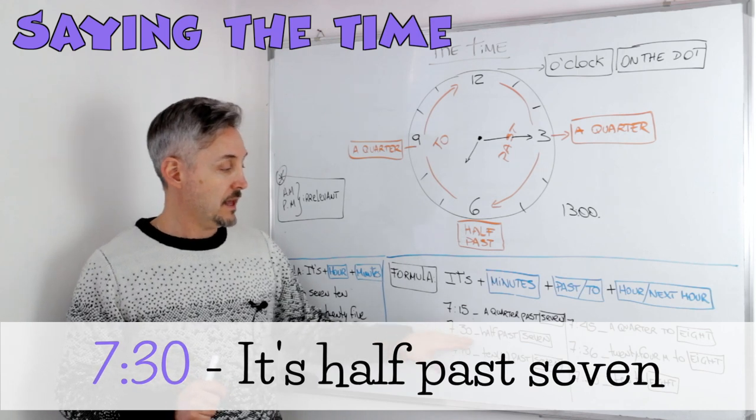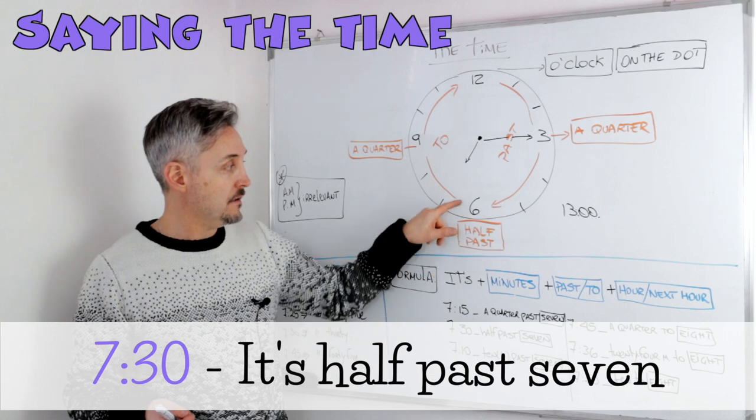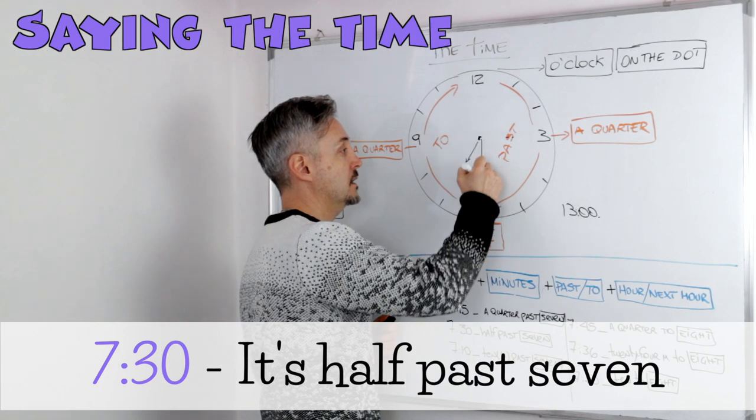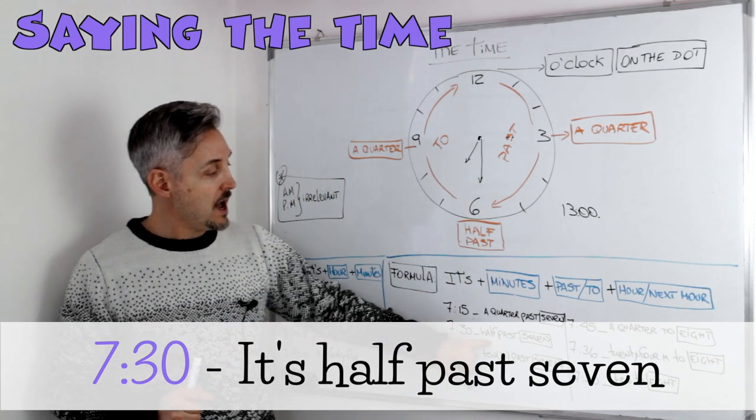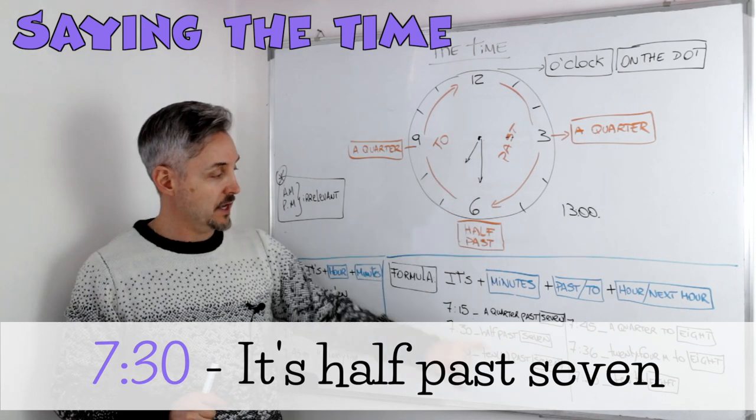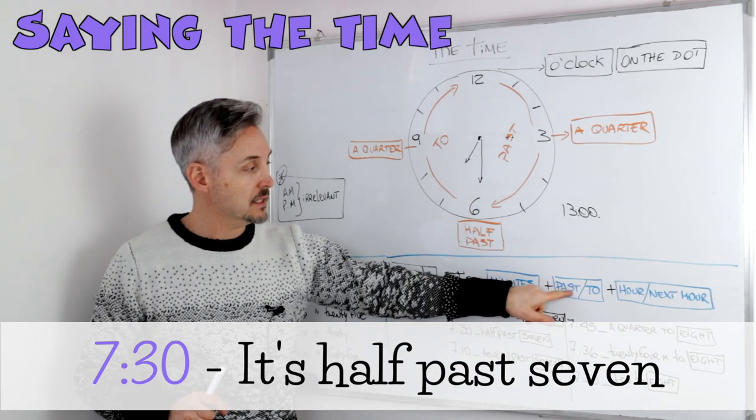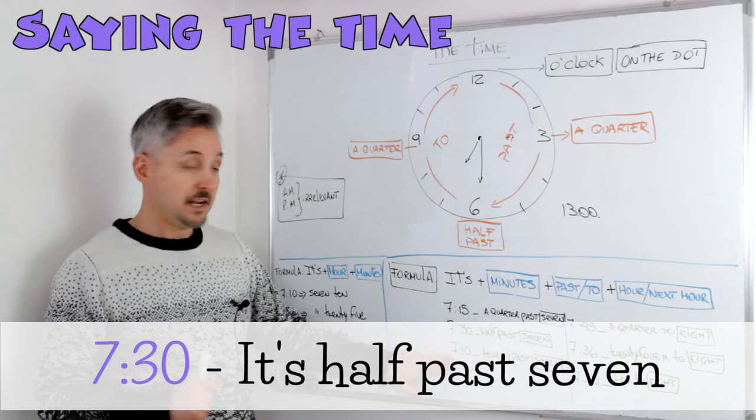The next one, 7 and then we have the number 30. So half, half, because it's right here. Let's just write the hint. So it's half past 7. Half past, first the minutes, then past, and then the hour, 7.